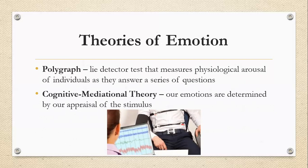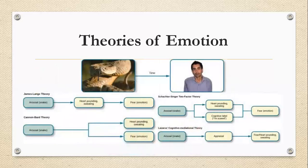Below is a chart, and we're going to use fear as the example, with the arousal stimulus in all cases being a snake. In James-Lange theory, we see the snake, our heart starts pounding, we're sweating, and therefore fear is the emotion we feel. In Cannon-Bard theory, our heart will be pounding and we'll be sweating when we see that snake as we simultaneously feel our fear emotion.